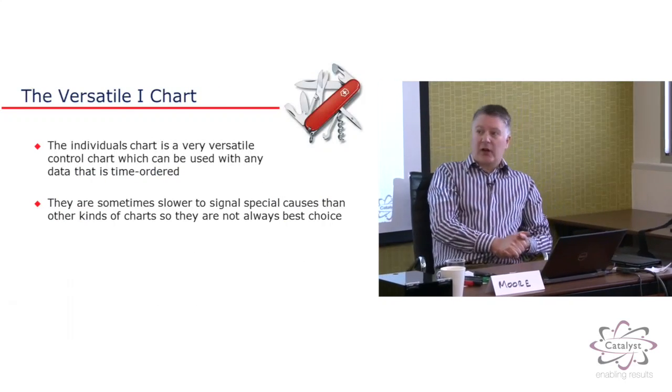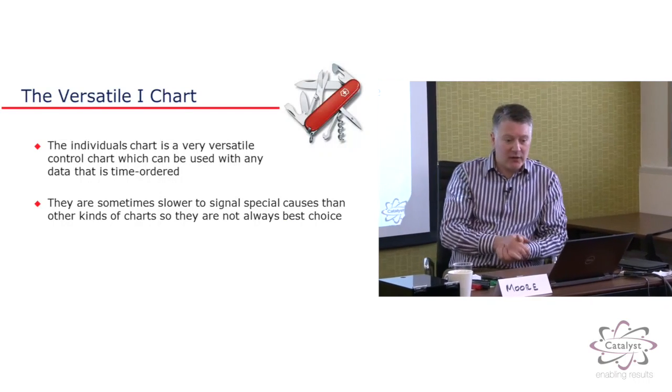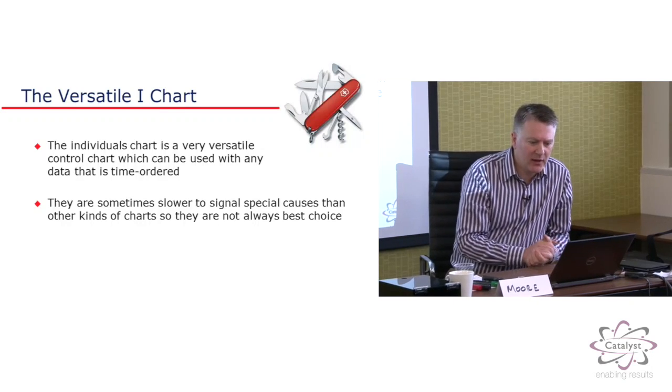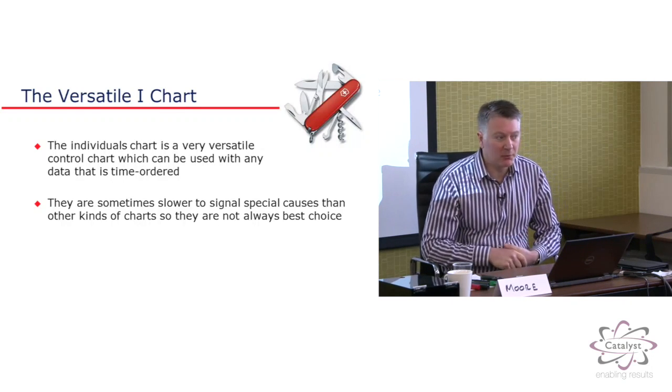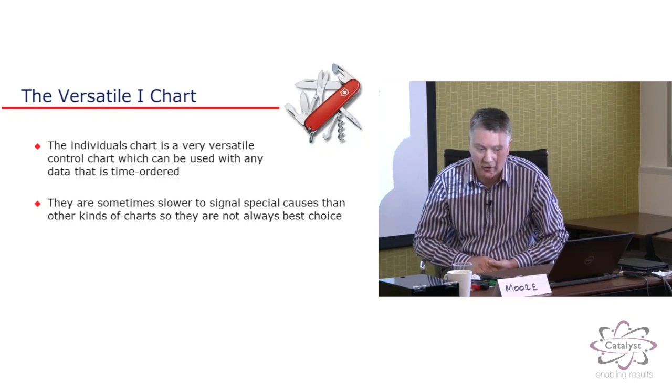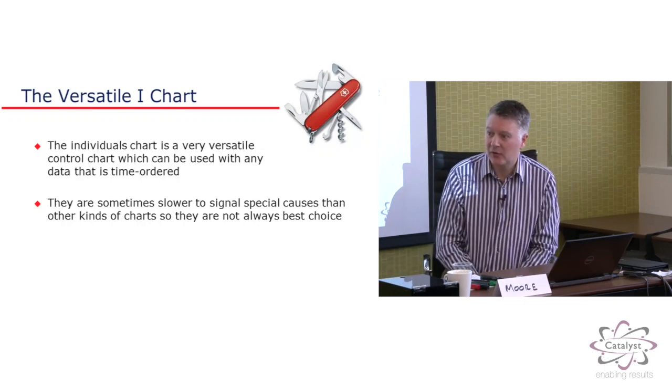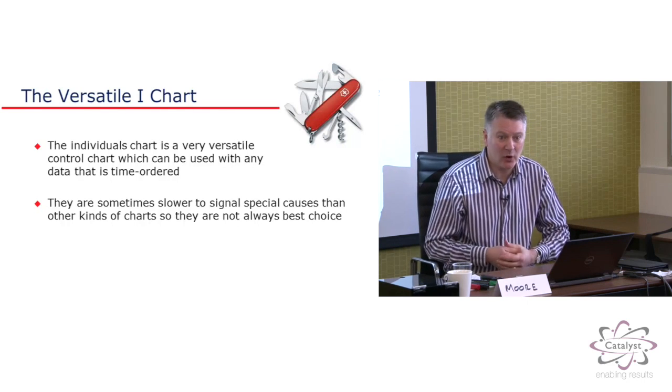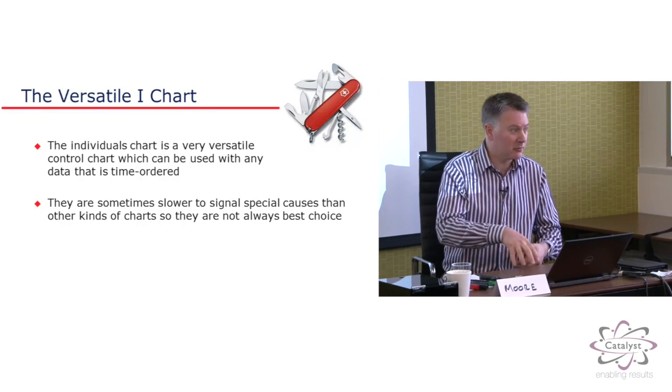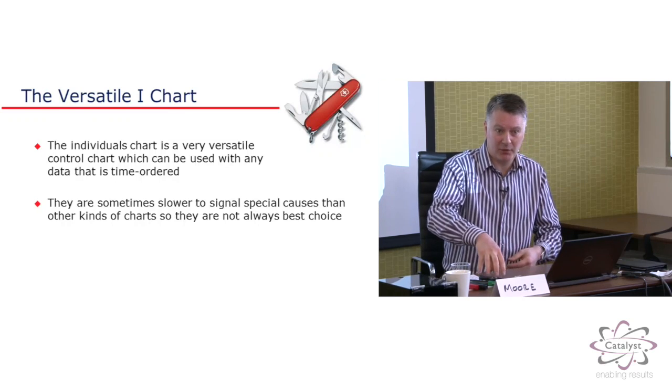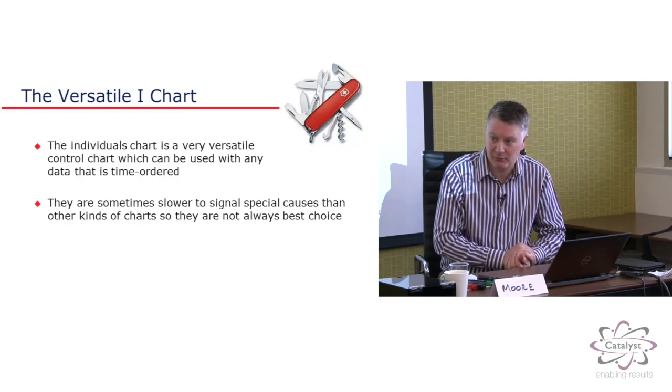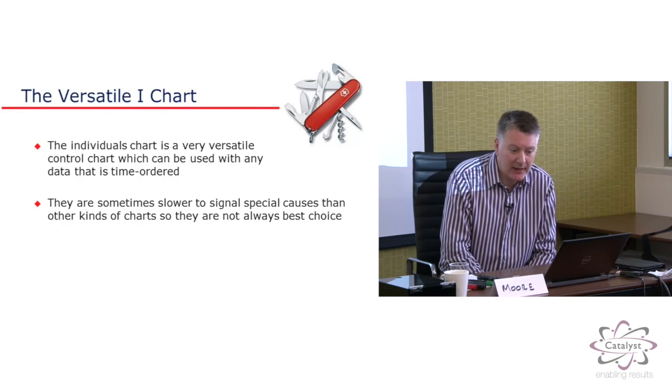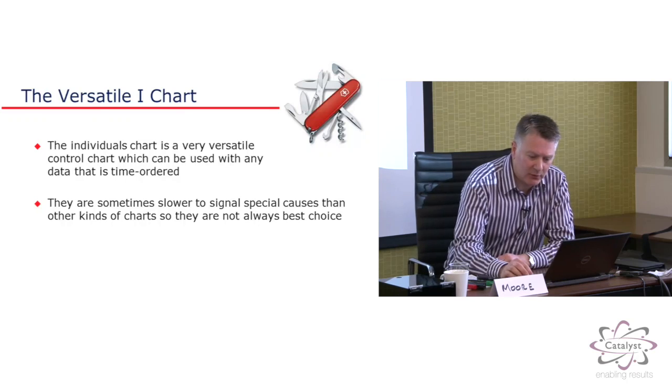So, the chart we're focusing on is the individual's chart. It's a good one to start with because it's probably the simplest one to use and to understand. And it's also a very versatile chart. We can plot all sorts of things on an individual's chart. We can plot distances from a target, so continuous data. But we can also plot any kind of data that arises over time, like counts of defects, number of defects per day or number of defects per item, proportion of defective items per day or per batch.